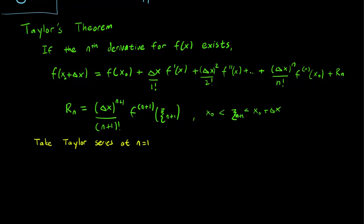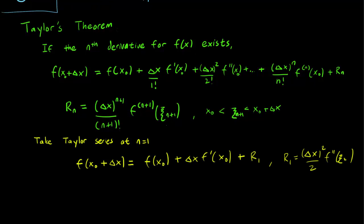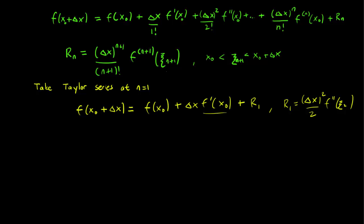Let's first take the Taylor series at n equals 1. Notice that we have an f' term over here, and we can quite easily solve for it to get f'(x0) equals f(x0 plus delta x) minus f(x0) over delta x minus R1 over delta x. Let's just rewrite this R1 over delta x as delta x over 2 times f double prime zeta 2.